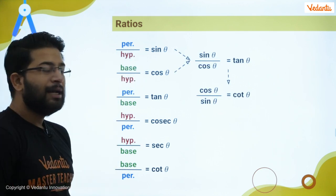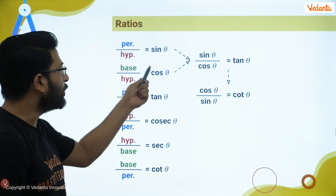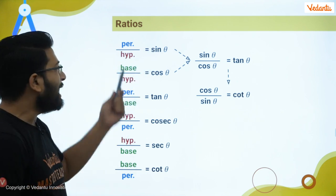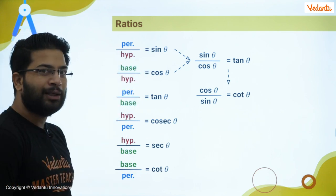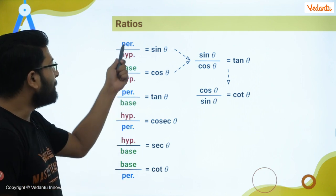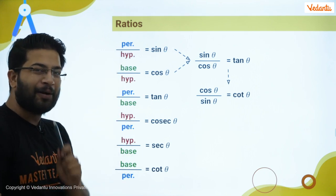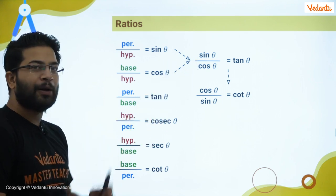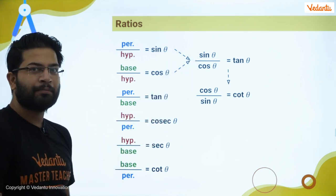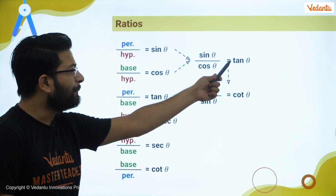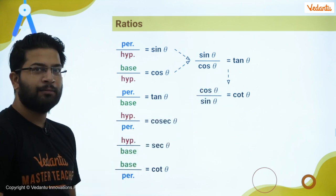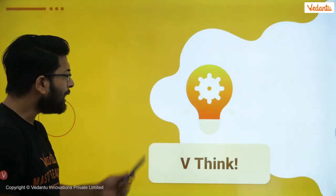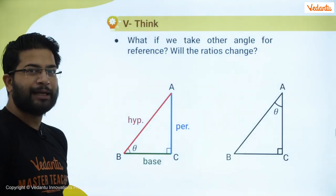If we divide sin theta upon cos theta, the hypotenuse cancels and we get perpendicular upon base, which is tan theta. So sin theta upon cos theta equals tan theta. And since the reciprocal of tan theta is cot theta, cos theta upon sin theta equals cot theta.